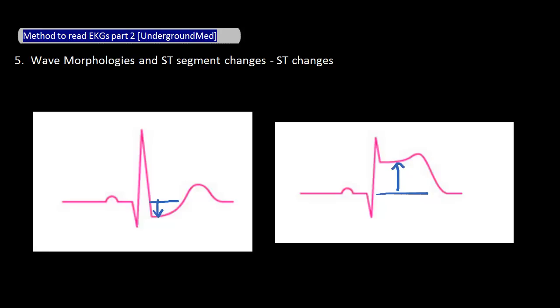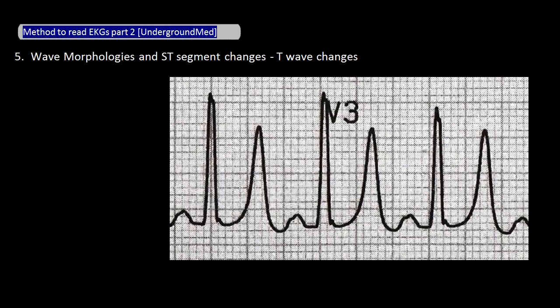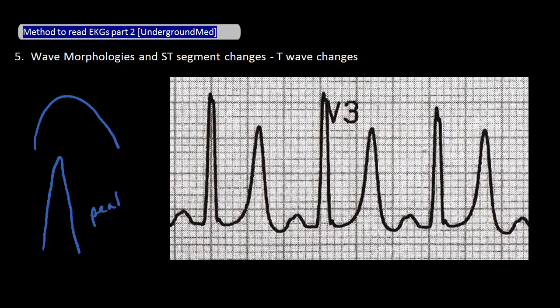When you are reading an EKG in real life, it's very important to look for ST changes in all 12 leads. You may also see peaked T waves, which are associated with hyperkalemia. Large T waves are not the same as peaked T waves. When thinking about the difference between large and peaked T waves, I like to ask myself if it would hurt my butt to sit on the T wave. If it's round and smooth, it wouldn't hurt. But if it's pointy, it would hurt my butt — and thus, this is a peaked T wave. In this EKG, do you think these T waves are large T waves or peaked T waves? If you said peaked T waves, you are correct.